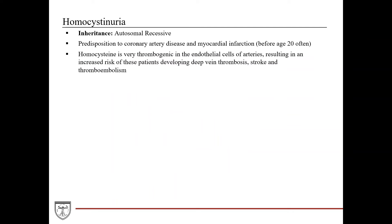The inheritance of this disorder is autosomal recessive. What's particularly notable is that these patients have a predisposition to coronary artery disease and myocardial infarction at a very young age — potentially before age 30 or even 20. Homocysteine is very thrombogenic in endothelial cells of arteries, resulting in increased risk of developing clots, particularly deep vein thrombosis, stroke, and thromboembolism.